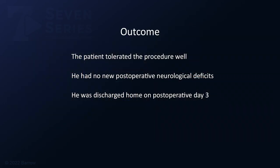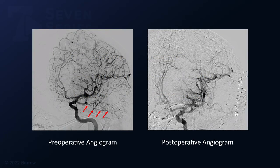The patient tolerated the procedure well. He had no new postoperative neurologic deficits and was discharged on postop day three. His postoperative angiogram shows complete resection of the AVM with elimination of the arteriovenous shunting into the vein that was seen preoperatively.